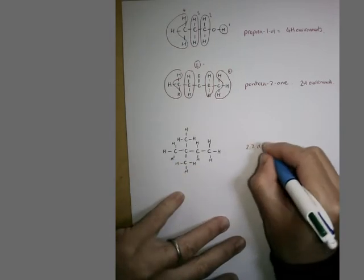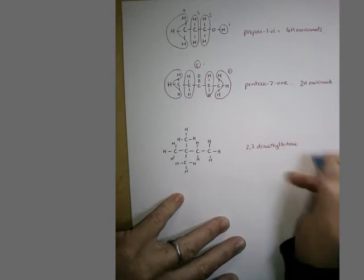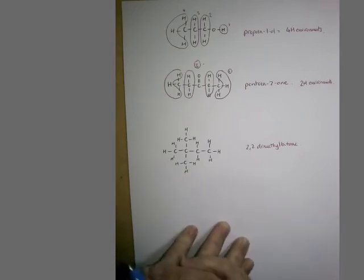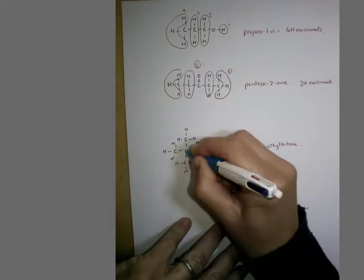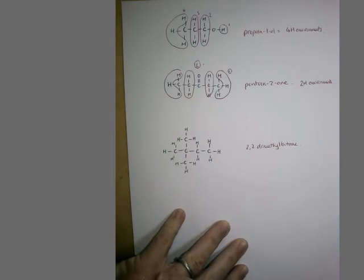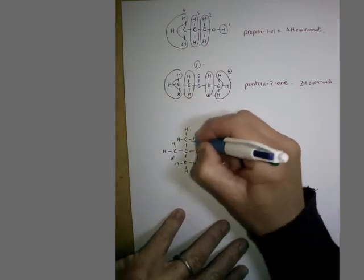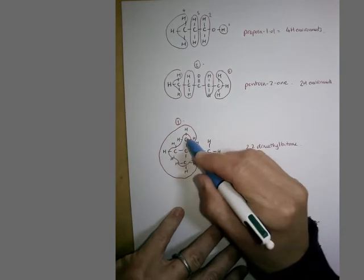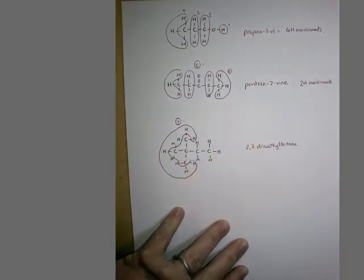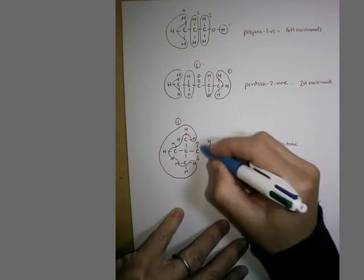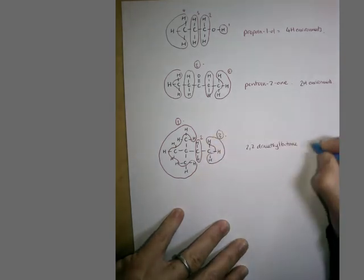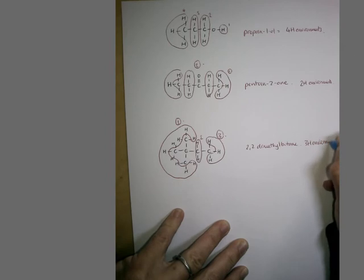The final example is 2,2-dimethylbutane — the type of example you come across quite a lot at A-level, with methyl groups near the end of the chain. Each of the three methyl groups is attached to the same carbon, so all nine hydrogens find themselves in the exact same environment — that's environment number one, with nine protons. The CH2 protons form environment number two, and then we've got a third environment at the end of the chain. So 2,2-dimethylbutane has three hydrogen environments and will show three peaks on its NMR spectrum.